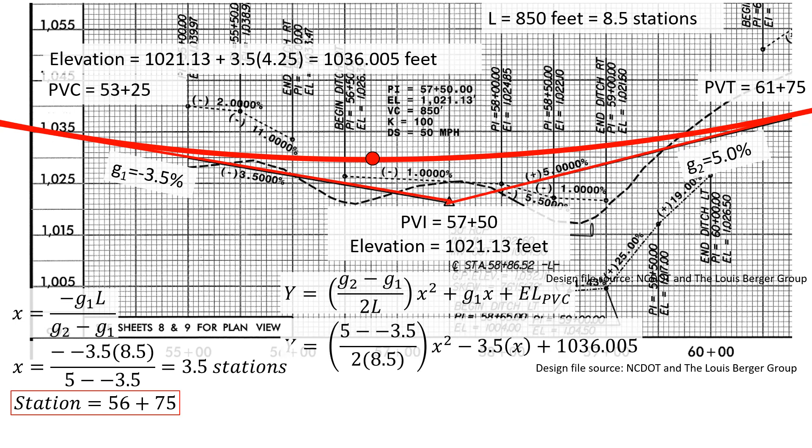Y equals AX squared plus BX plus C where A is G2 minus G1 over 2 times L. B is G1 and C is the elevation of the PVC.